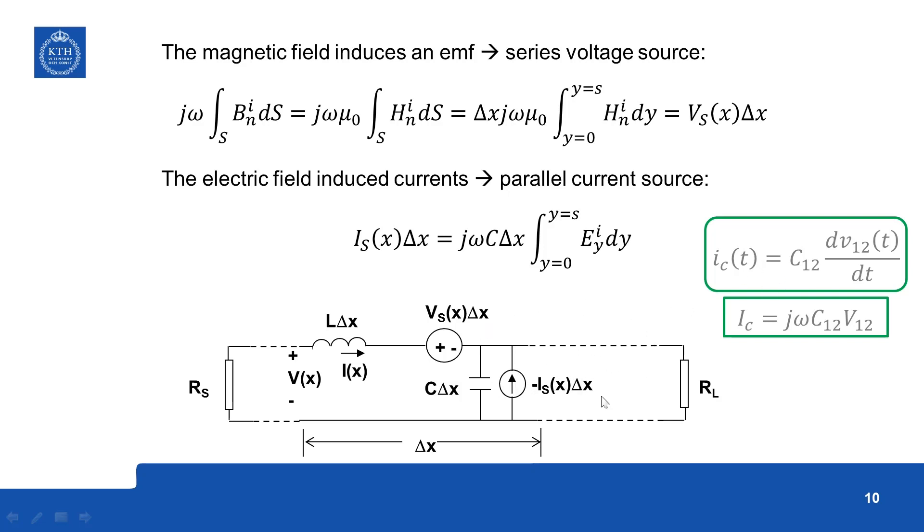So it is quite similar, even though an important difference is that this C here is the capacitance between these two wires and not the coupling capacitance as in the previous case. So since this is positive and this is negative but we assume the direction of the current upward, we put a negative sign in front.